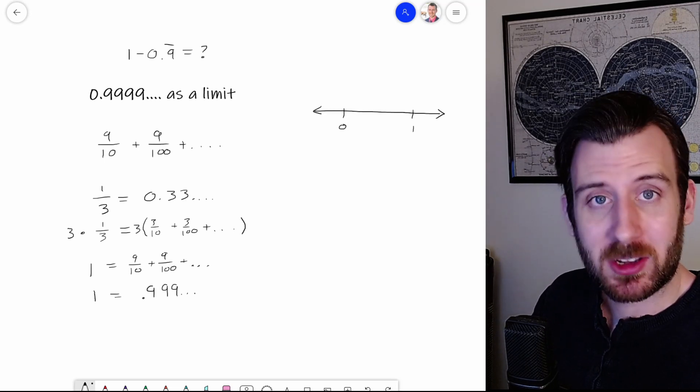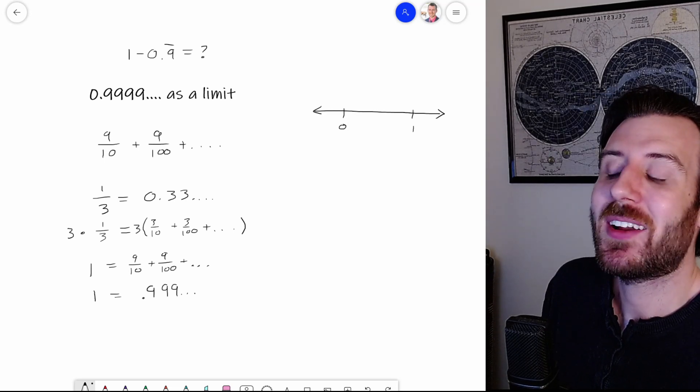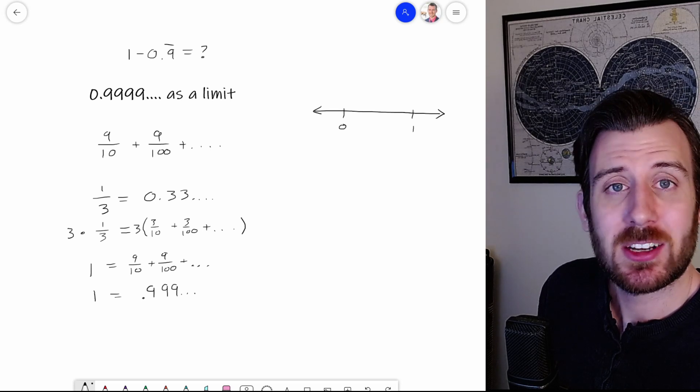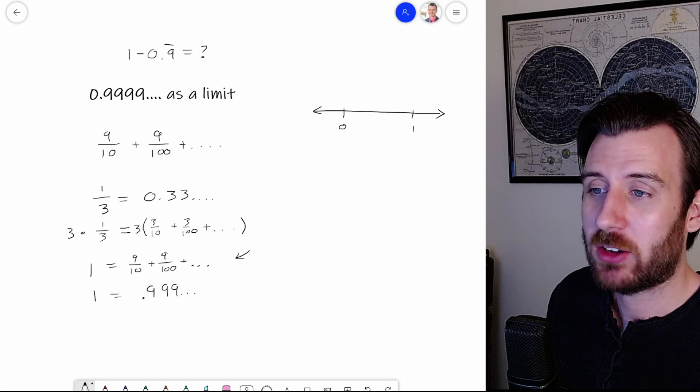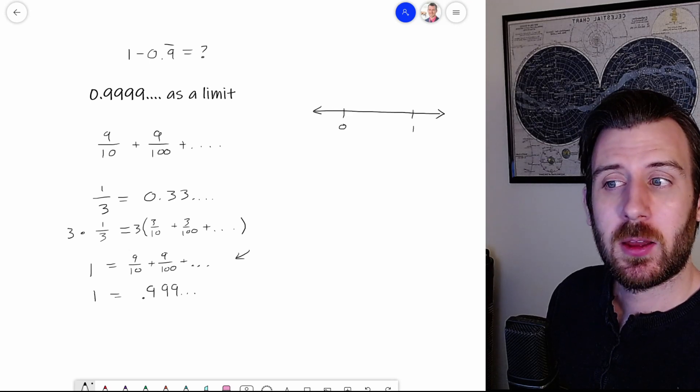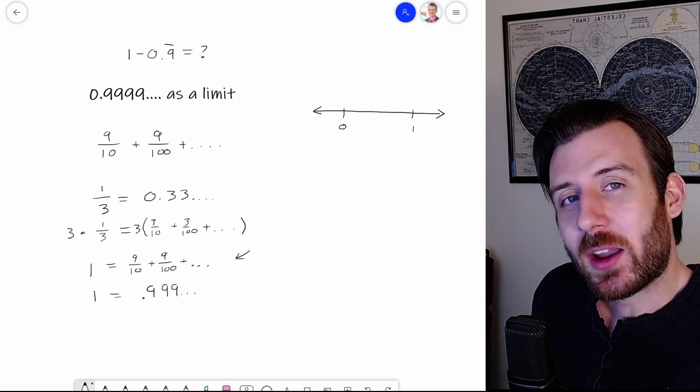And it doesn't end because it's repeating forever. So the question becomes, where is it on this number line? Is there a number? There has to be because this is perfectly good math that I'm doing. I'm just doing addition of fractions. Where does it put me? Well, I argue that it puts you right at 1.